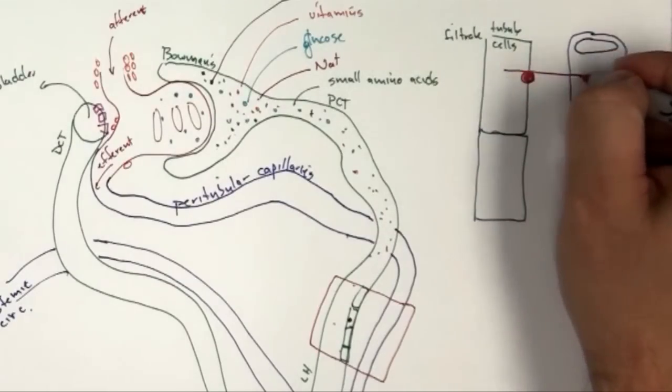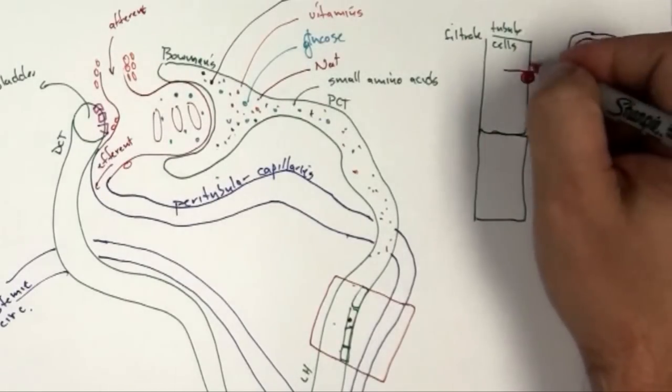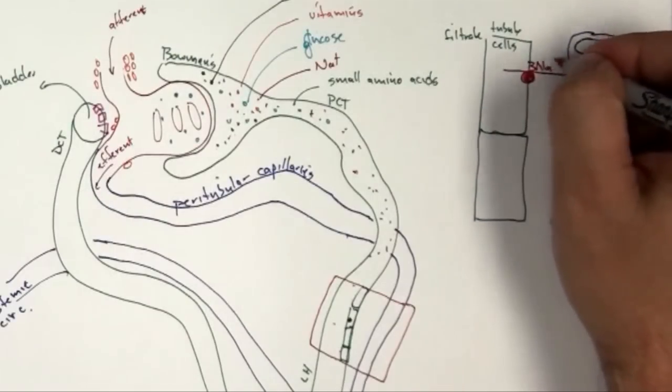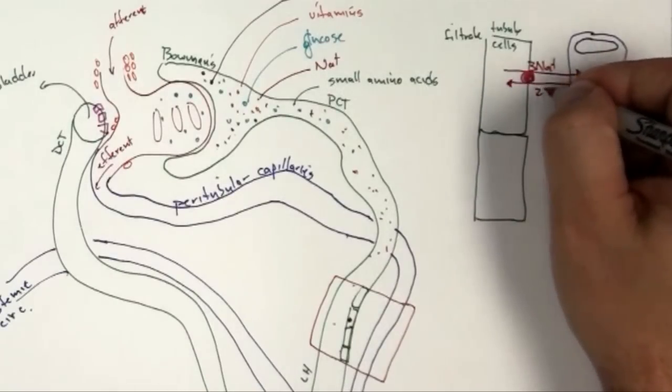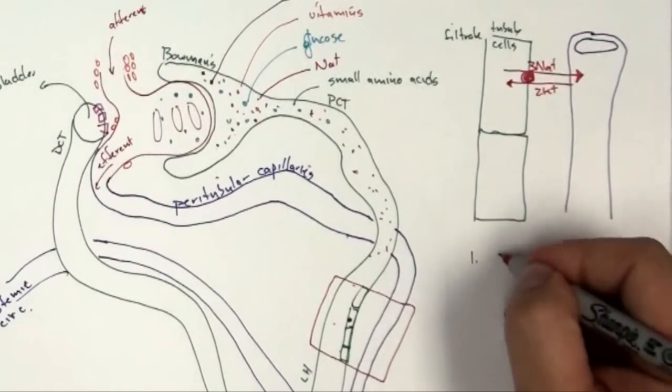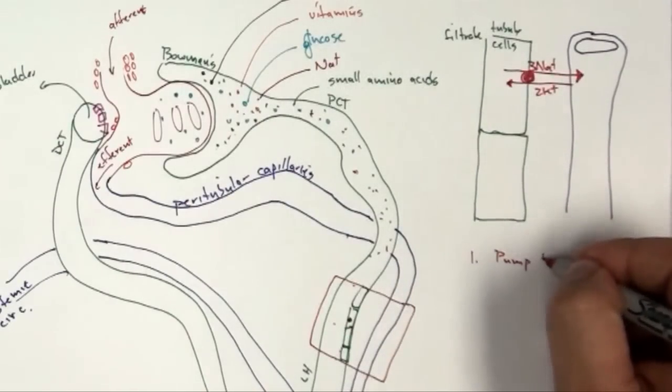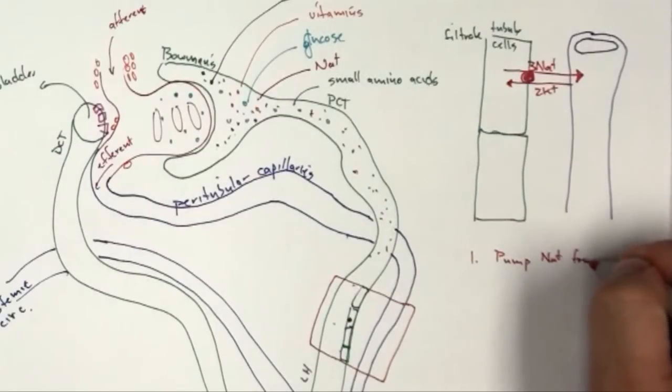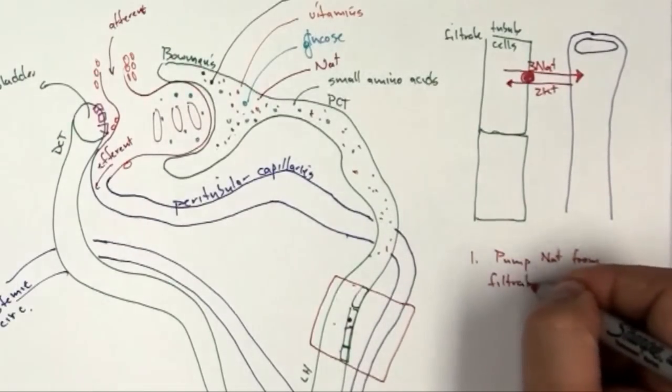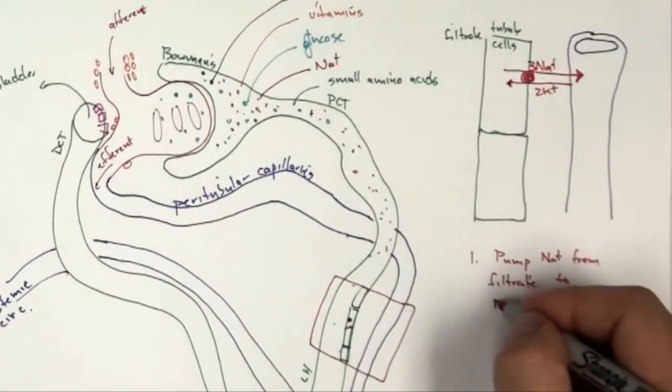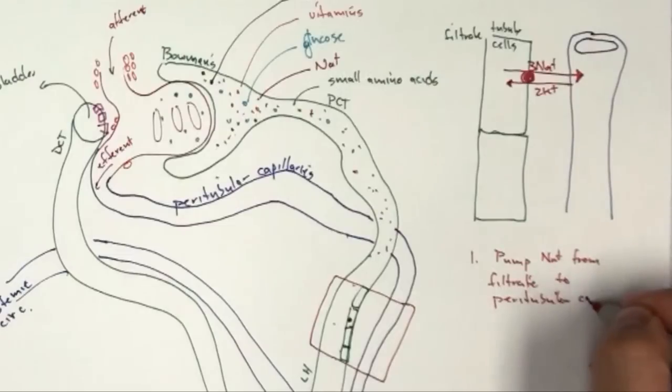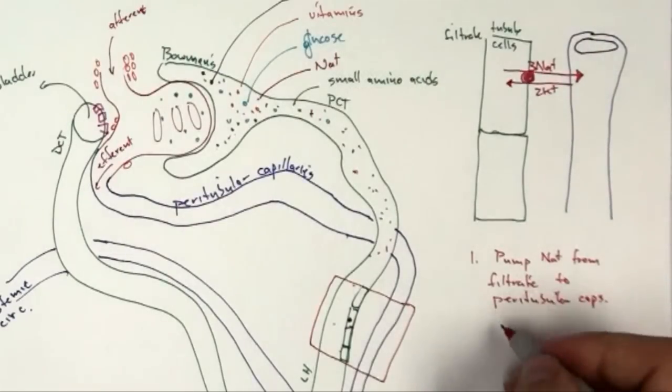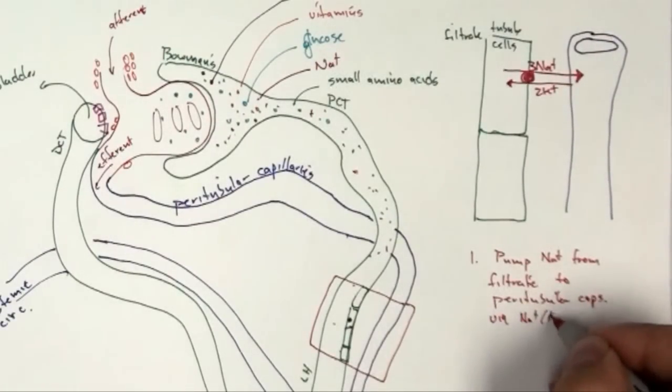And if you've had plenty of A and P, you've heard of that one several times. We're going to pump three sodiums in one direction, and two potassiums in the other direction. So our first step is pump sodium from filtrate to peritubular capillaries, I'm going to shorten that as caps, via sodium potassium ATPase.